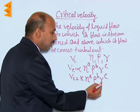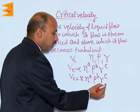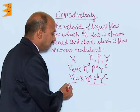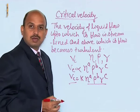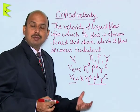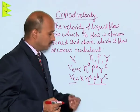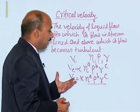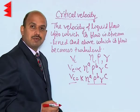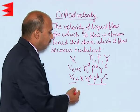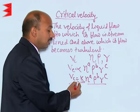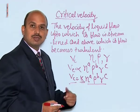By putting in the dimensional formula of all these quantities — as we have already done this concept in the first chapter — you can derive the formula for Vc, where k is a dimensionless constant.